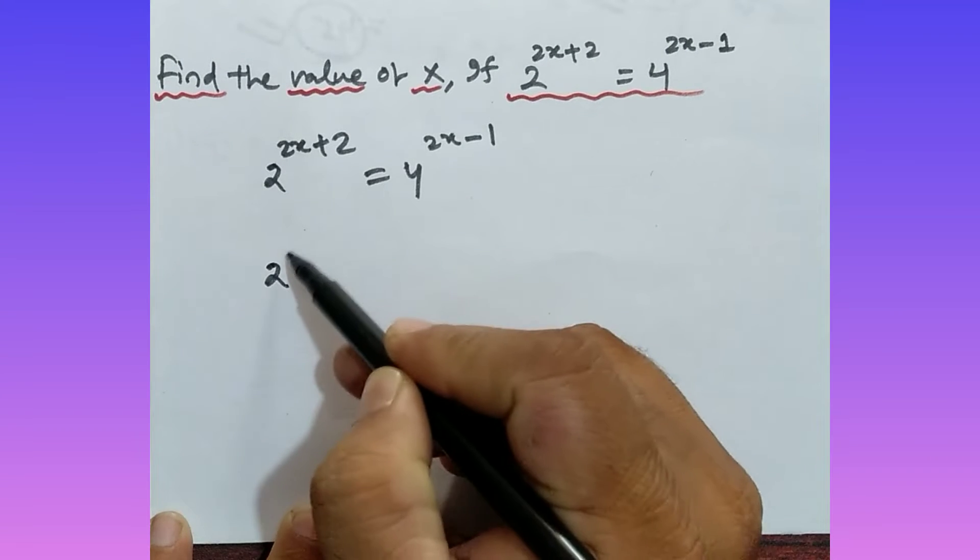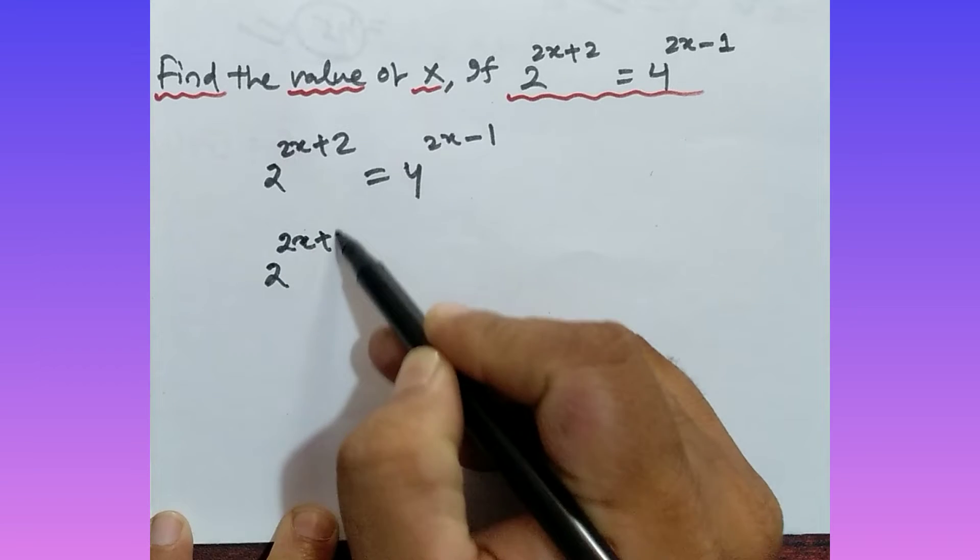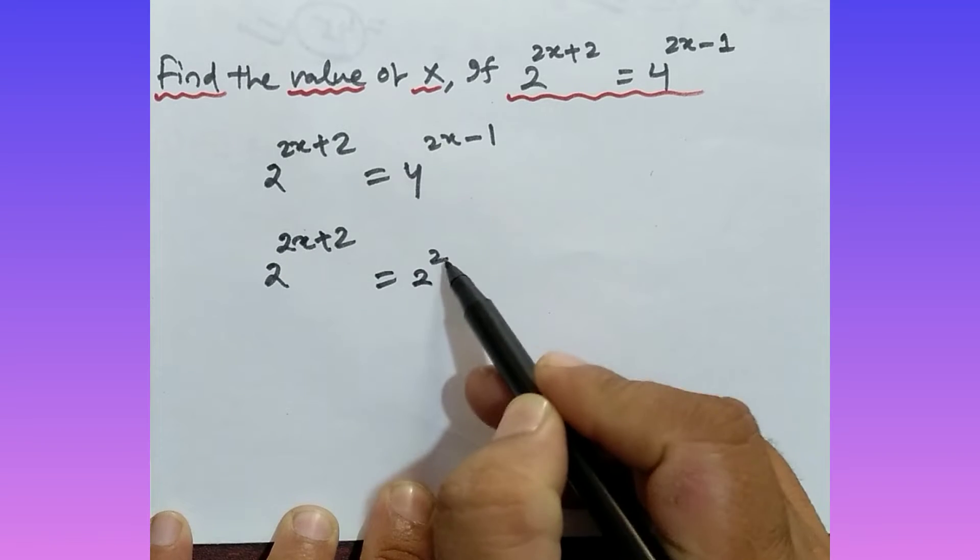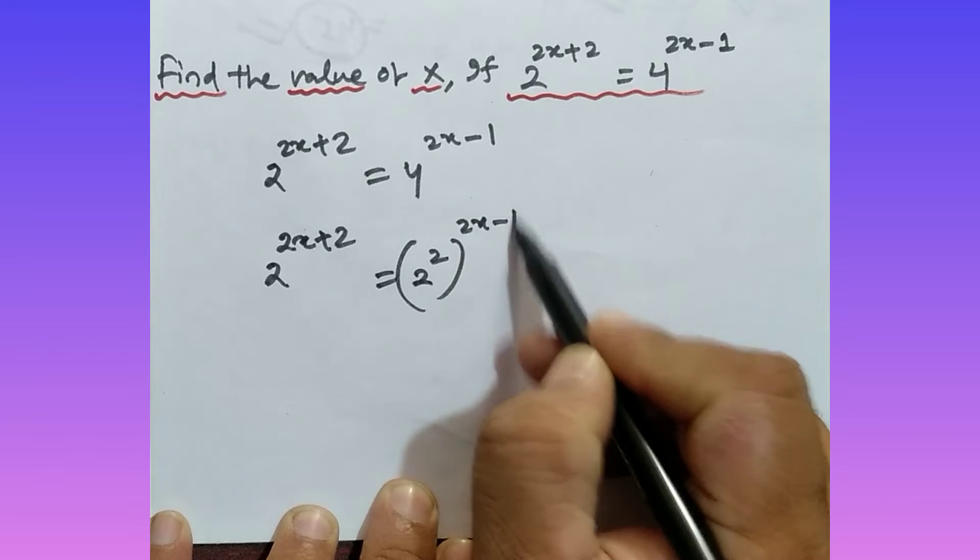Look at here, the left side you have to write as usual, that is 2 to the power 2x plus 2, and instead of right side, instead of 4, again also write 2 squared, right, and thereafter 2x minus 1. Okay.